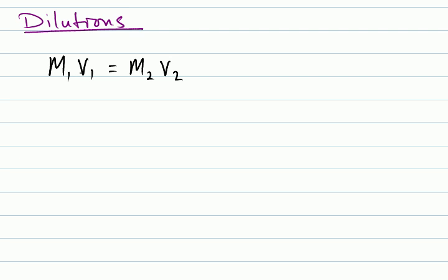The difference between the 1's and the 2's, M1, M2, and V1, V2, basically the 1's stand for the starting amount, so your starting molarity is going to be the M1, and then your ending molarity is going to be the M2, same thing with the volumes, V1 and V2.